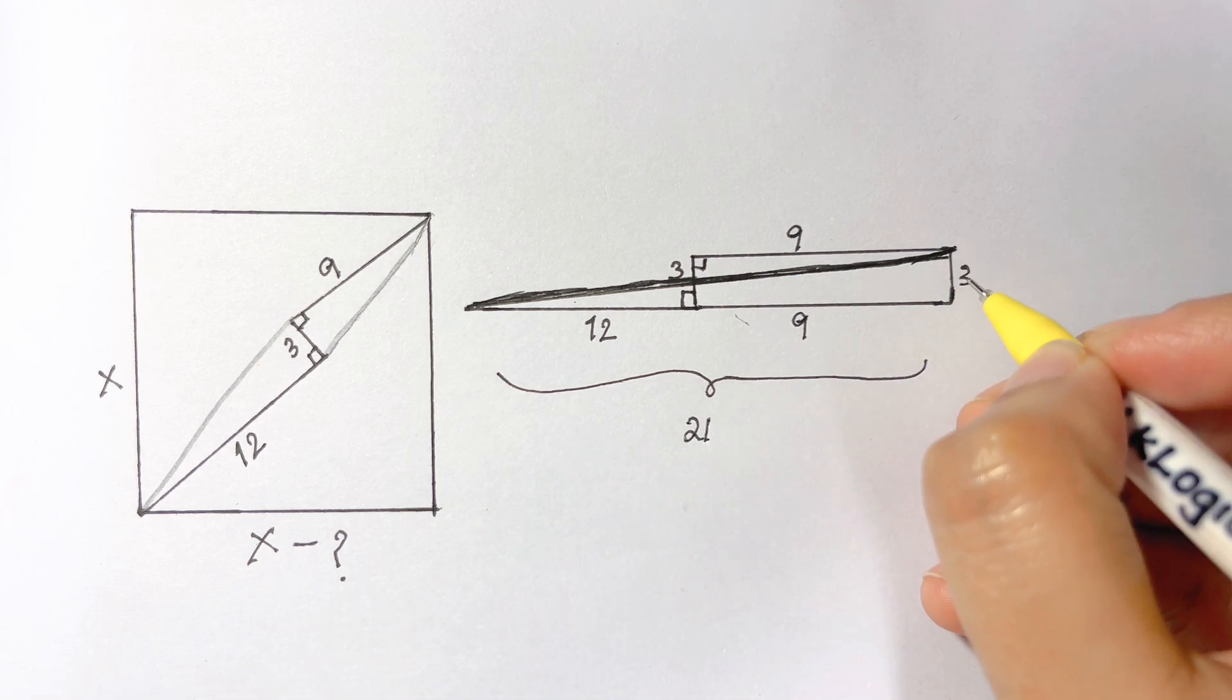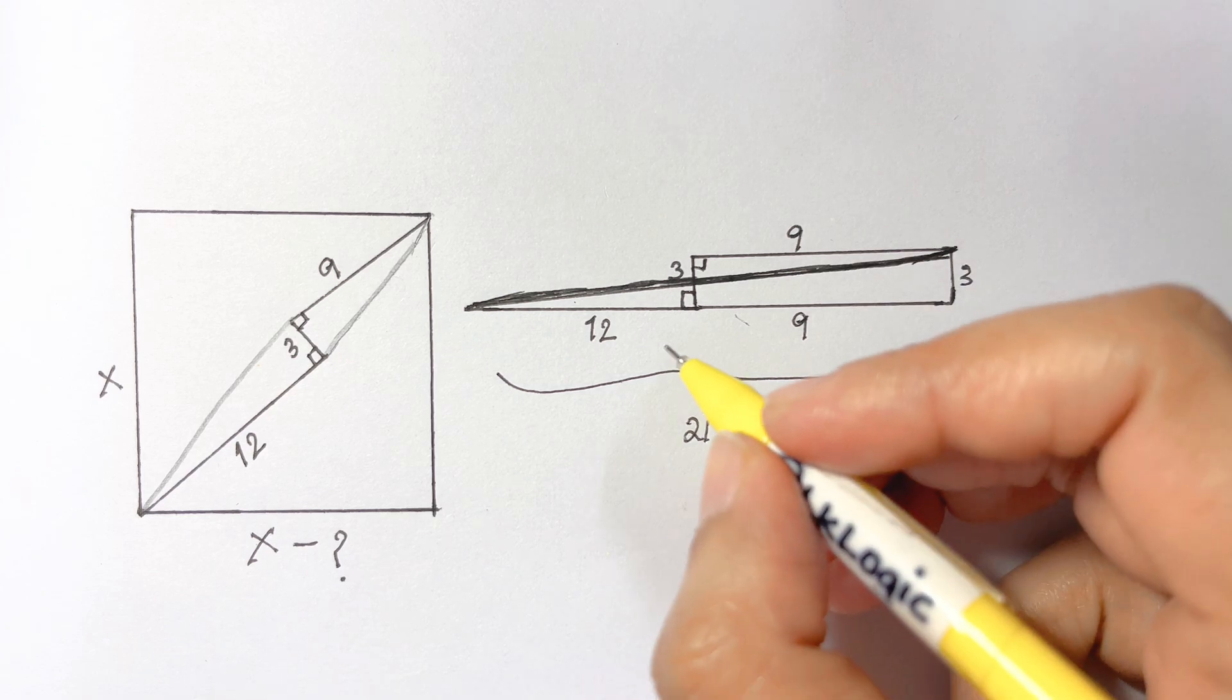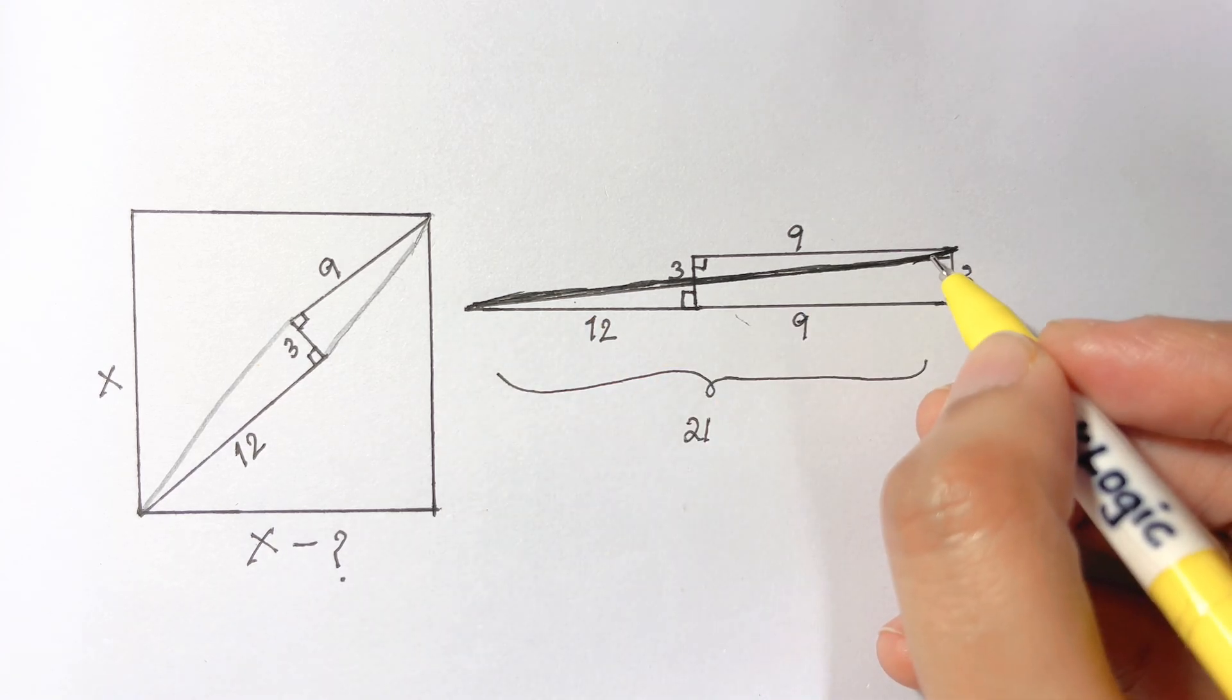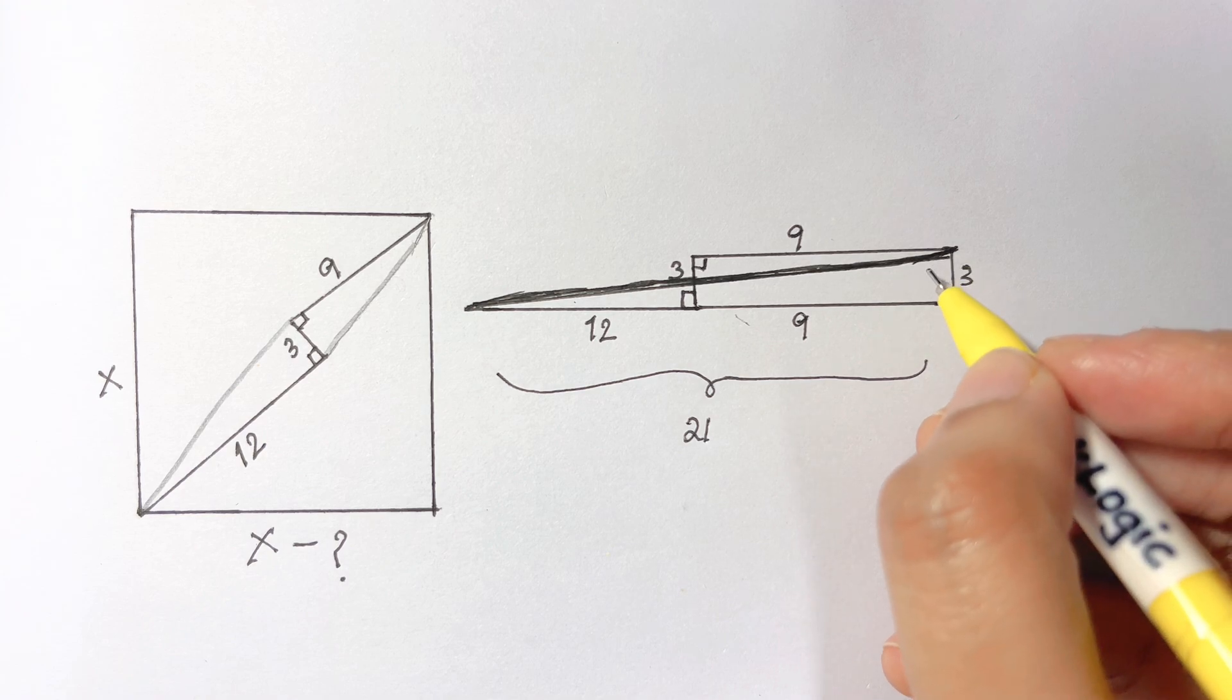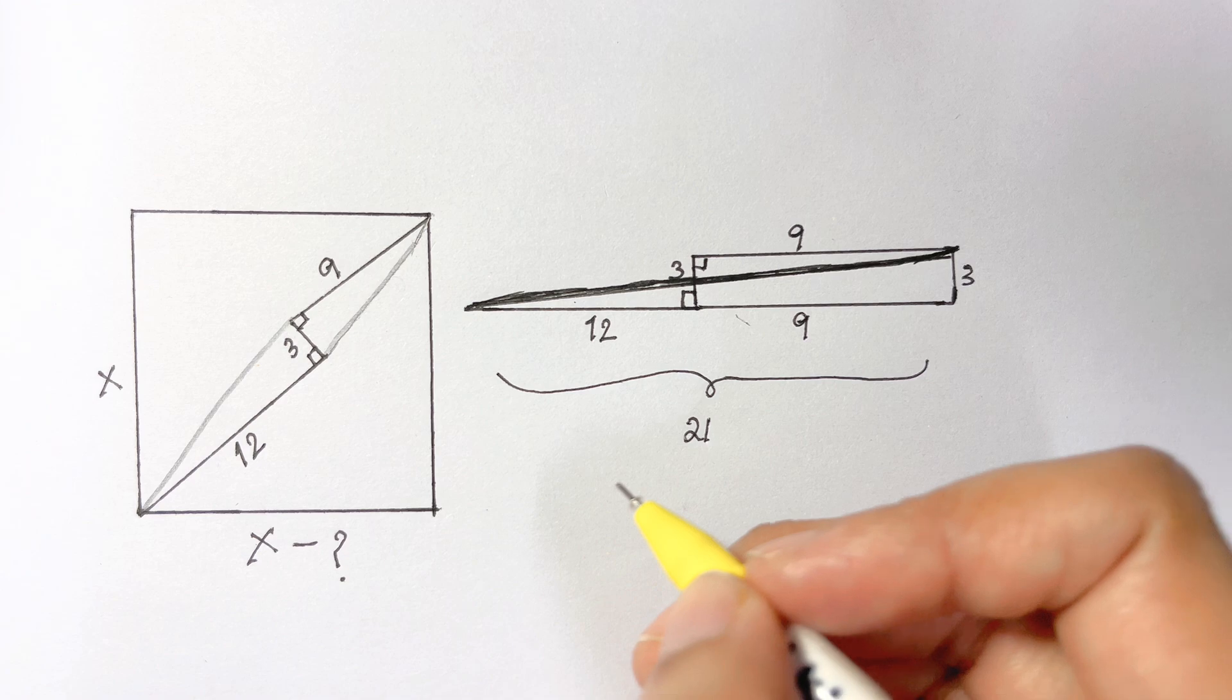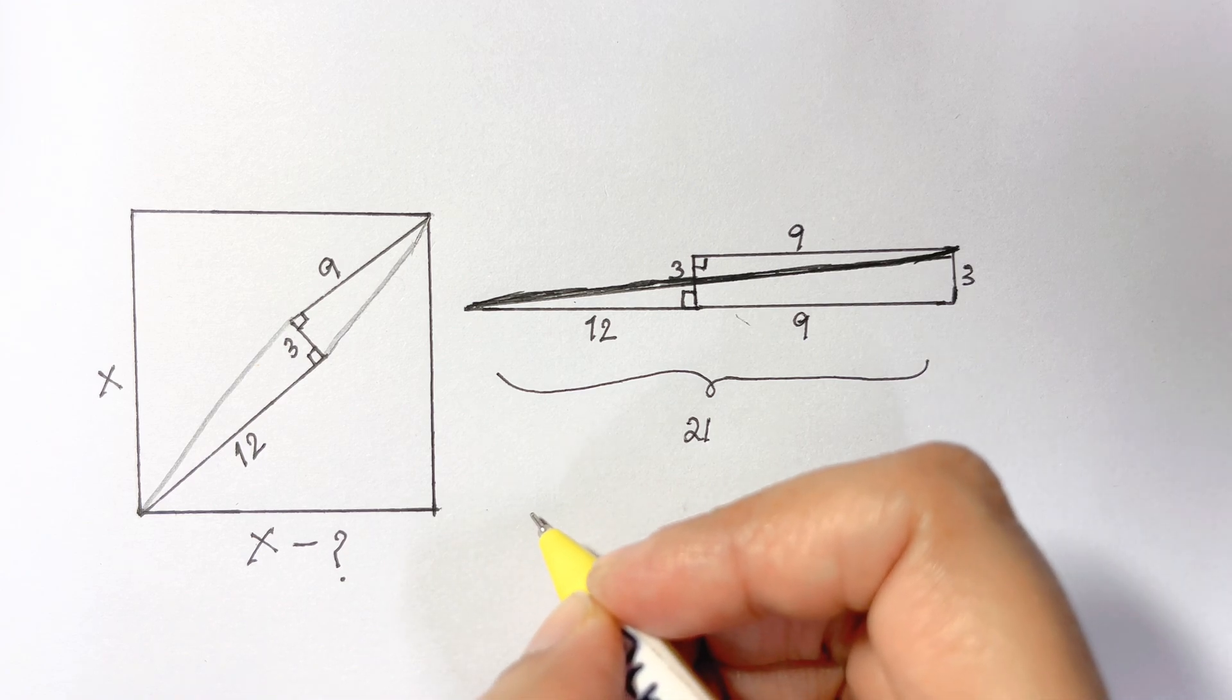We can easily find the hypotenuse. This is the hypotenuse. We can easily find what the hypotenuse will be equal to. Let's write it down. We can use Pythagorean theorem to find the hypotenuse.